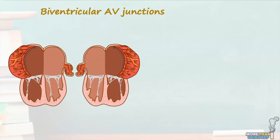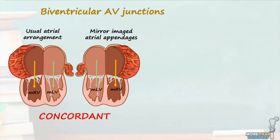The first type of biventricular AV junctions is shown in these two hearts. In the first heart, we can see the right atrial appendage is on the right and the left atrial appendage is on the left, producing a usual atrial arrangement. In the second heart, the right atrial appendage is now on the left and the left atrial appendage is now on the right, describing mirror-imaged atrial appendages. Considering the ventricular mass connecting each of these atria, we find that in both hearts the morphologically right atrium is connected to the morphologically right ventricle and the morphologically left atrium is connected to the morphologically left ventricle. As each atrium is connected to the correct underlying ventricle, we call this group of hearts concordant atrioventricular connections.